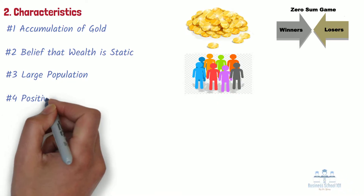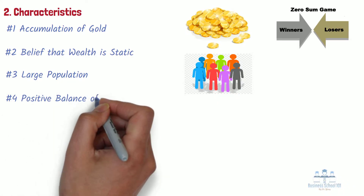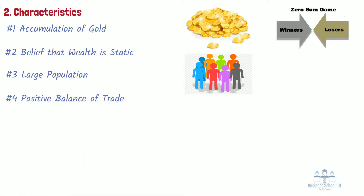Number 4: Positive balance of trade. Mercantilists believed that by exporting more than they imported, they would be able to acquire a net accumulation of wealth from other nations. However, by contrast, if the nation brought more goods from abroad, it was essentially sending gold, wealth, and power abroad.